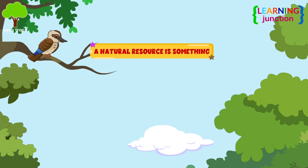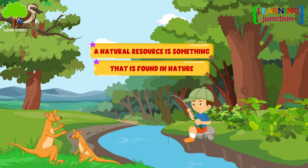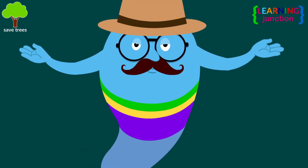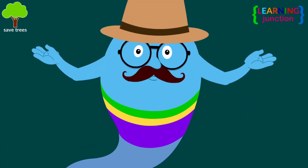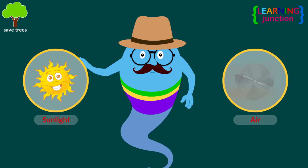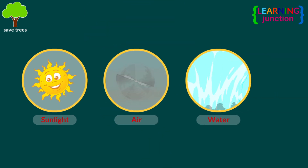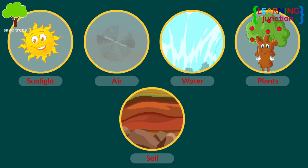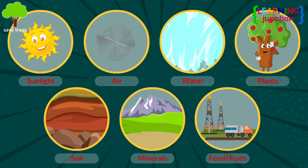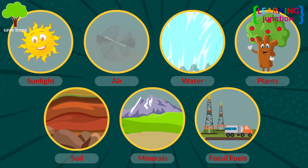A natural resource is something that is found in nature and can be used by people. The Earth's main natural resources are sunlight, air, water, plants, soil, minerals, and fossil fuels. Let's learn about these one by one.